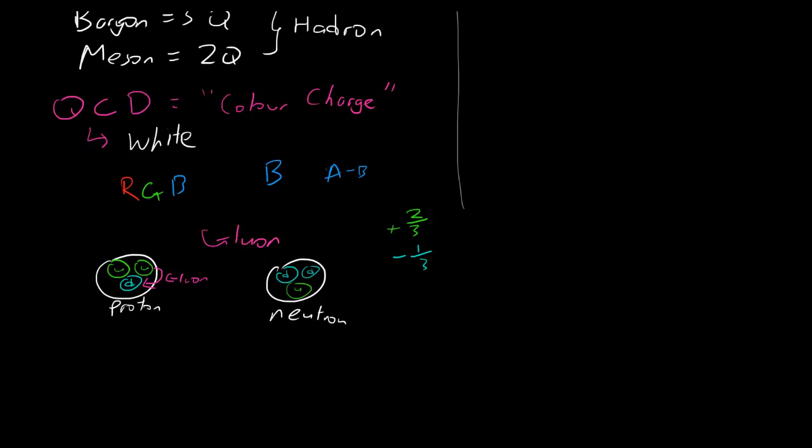After that, it becomes energetically favorable for the quarks to bind to a new quark. So for example, let's use a meson because it's easier. Let's say we have an up quark and a down quark. Let's say we have an up quark or a down quark and an anti-down quark. And we stretch this over a huge distance. Now what happens is that another anti-down quark and down quark would spring out of nowhere and attach itself to these stretched apart quarks, forming new ones.